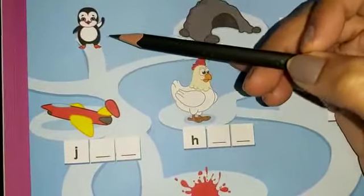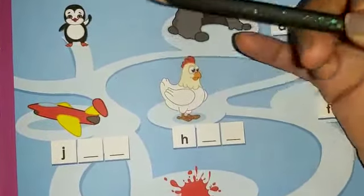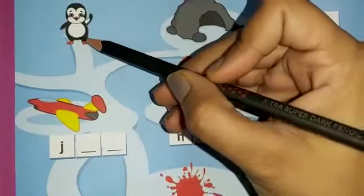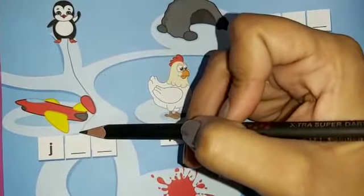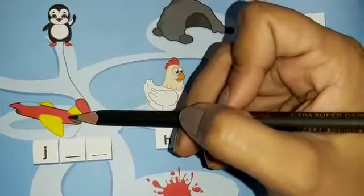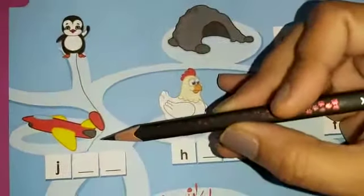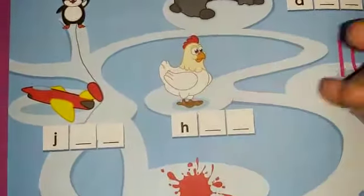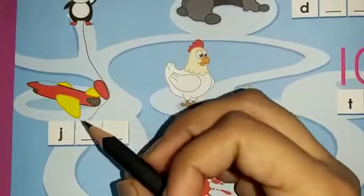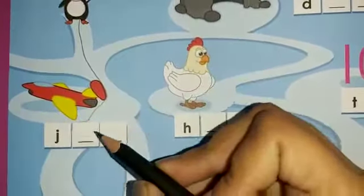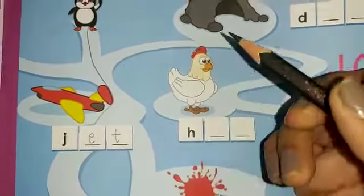Starting from here, here is the penguin. The penguin starts walking and it reaches over here. What picture can you see? This is a jet — J-E-T, jet. So write down E-T, jet.